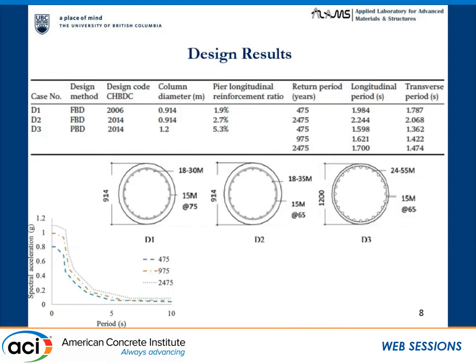I am presenting three design cases. Design case D1 is force-based design based on the older 2006 Canadian code, designed for a 475-year return period earthquake, with a longitudinal rebar ratio of 1.9%. Design case D2 is also force-based but based on the current 2014 Canadian code, with a 2475-year return period, and the rebar ratio increased to 2.7%. Design case D3 is performance-based design under the current national code, yielding a longitudinal rebar ratio of 5.3% — not practical — governed by the minimum damage criterion at the 475-year event, since the code does not allow rebar yielding.